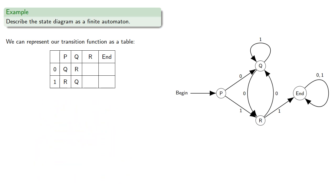And if you're at R, 0 sends you to Q, 1 sends you to END, and finally, if you're at END, either 1 or 0 will send you to END.